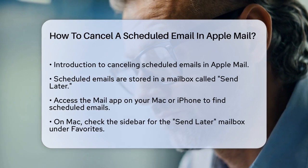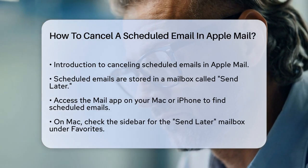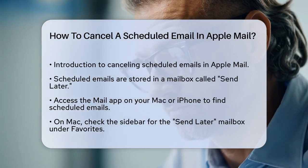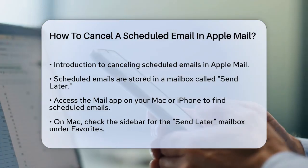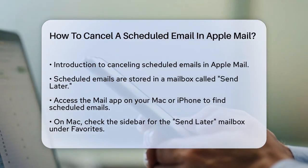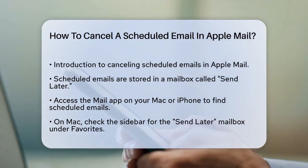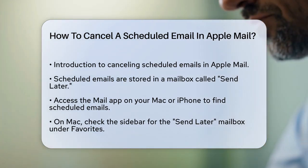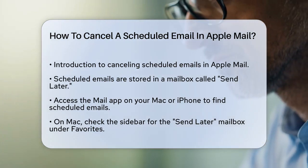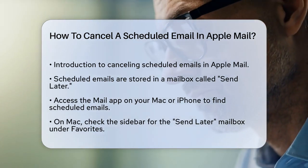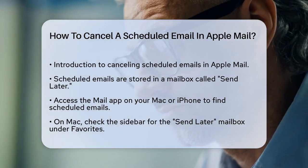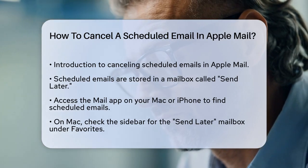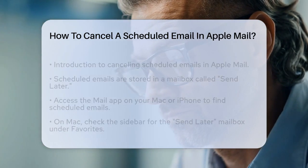First, you need to locate where your scheduled emails are stored. In Apple Mail, scheduled emails are kept in a special mailbox called Send Later. To find this, open the Mail app on your Mac or iPhone. On your Mac, look at the sidebar in the Mail app. You should see a Send Later mailbox listed under your Favorites.